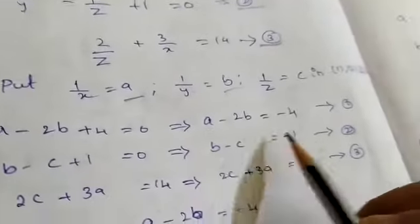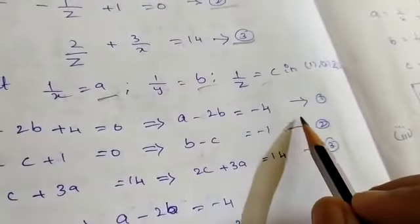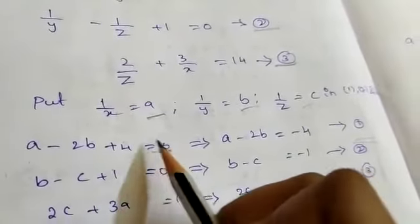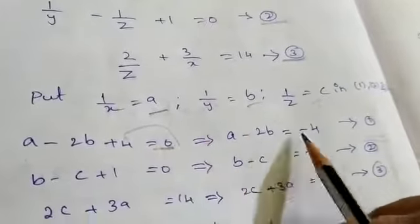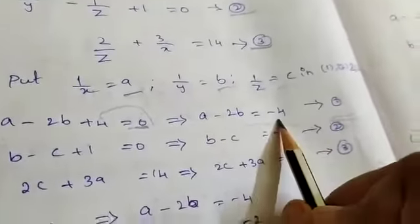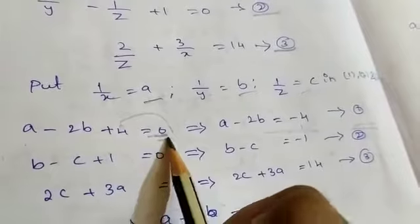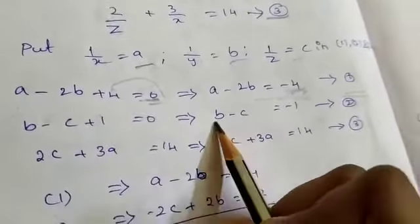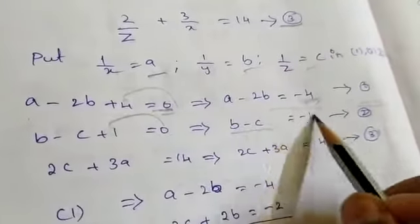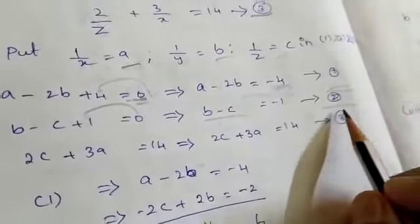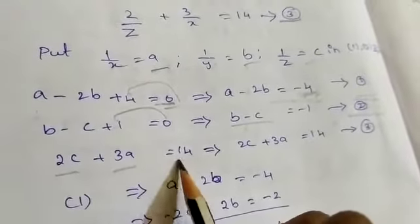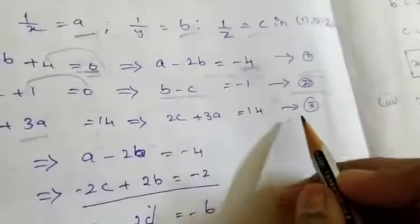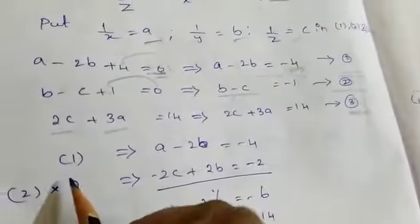After substituting: A minus 2B plus 4 equal to 0, which becomes A minus 2B equal to minus 4 — this is equation number 1. B minus C plus 1 equal to 0, which becomes B minus C equal to minus 1 — equation number 2. And 2C plus 3A equal to 14 — keep this as equation number 3, since there is already a constant.